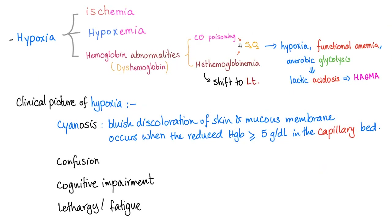As you know, there are three causes of hypoxia: ischemia, hypoxemia, and dyshemoglobin. This includes methemoglobinemia, where the SaO2, or oxygen saturation, is low, which will lead to hypoxia.